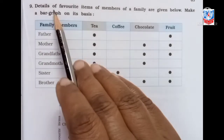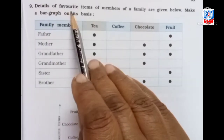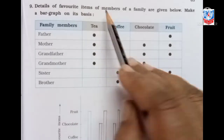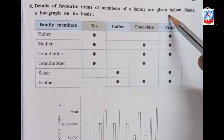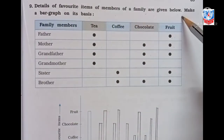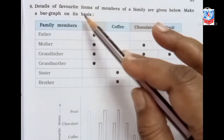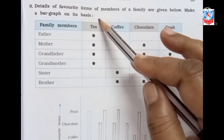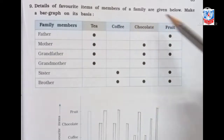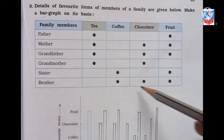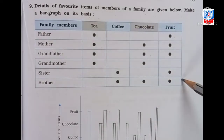Next, details of favorite items of members of a family are given below. Make a bar graph on its basis. The family members and their favorite items are given here, and we have to make a bar graph.